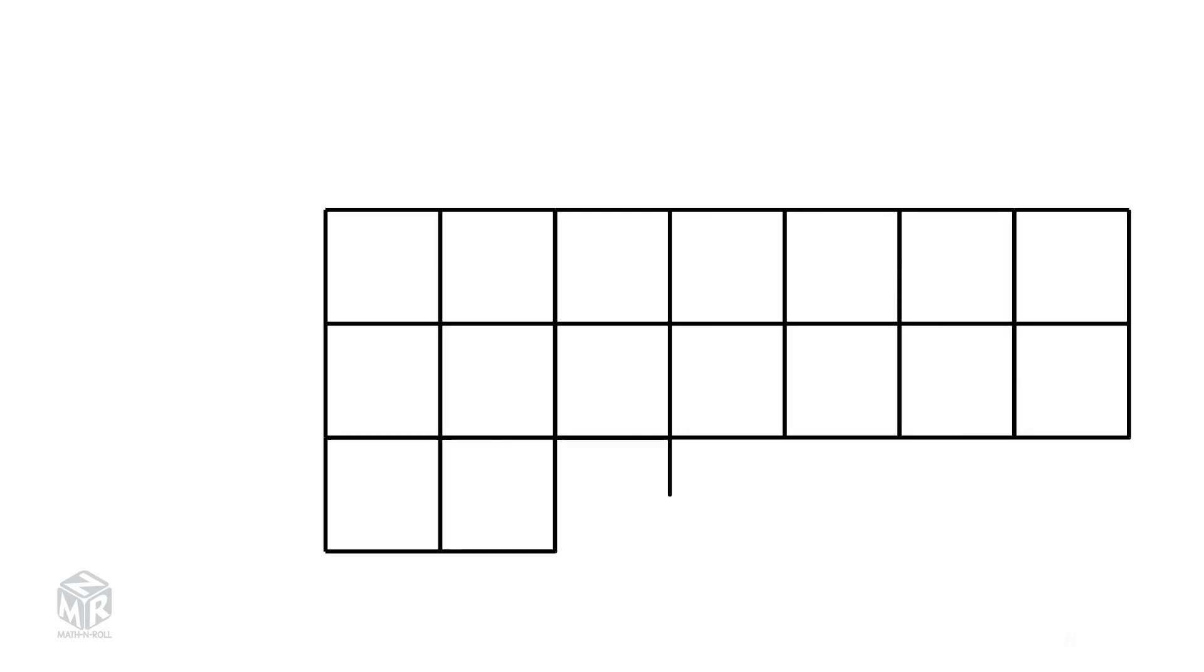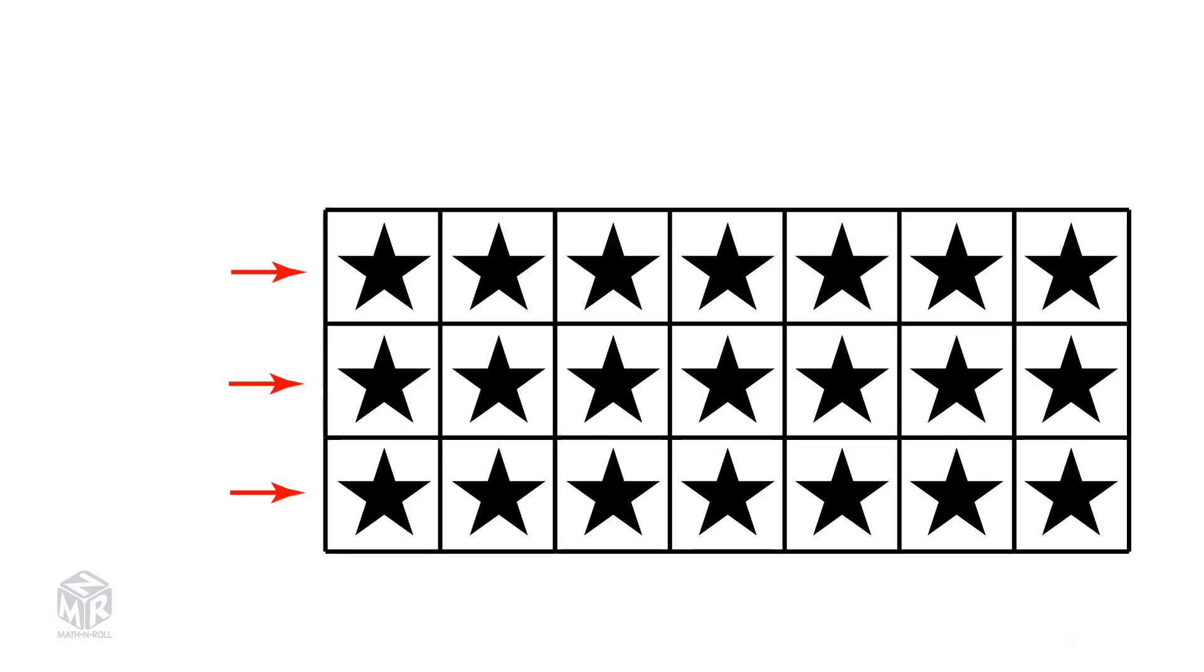What is an array? An array is a set that shows equal groups using rows and columns. In this array, we have 3 rows and 7 columns.